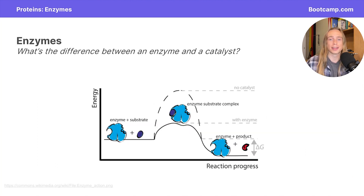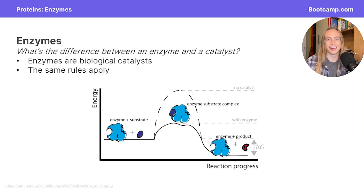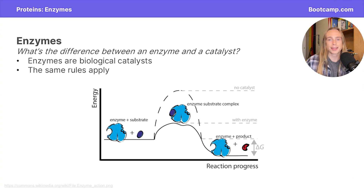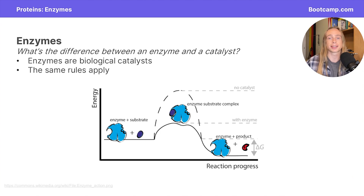Moving on to the more biological side of things, an enzyme is just a biological catalyst, and all the same rules that apply to catalysts also apply to enzymes. An enzyme is going to meet up with a substrate, and once they've combined, they form an enzyme-substrate complex. This enzyme-substrate complex eventually changes the substrate into a product molecule, and then they split apart again, leaving the free enzyme and a new product.